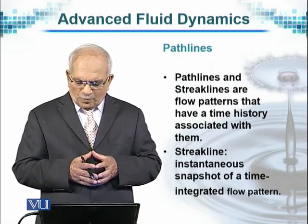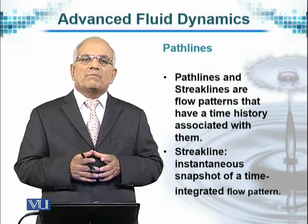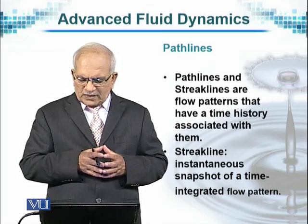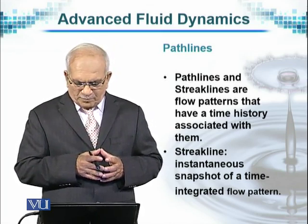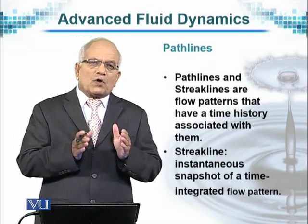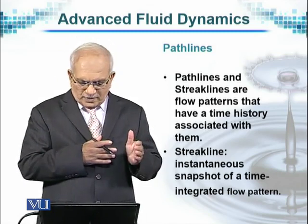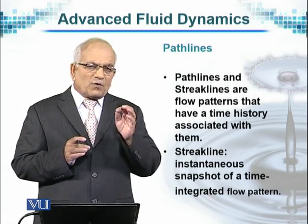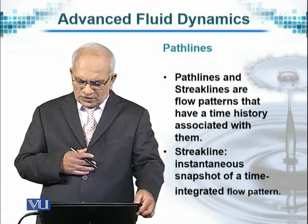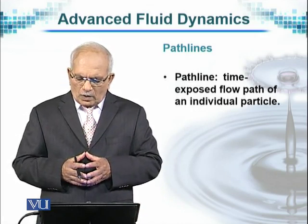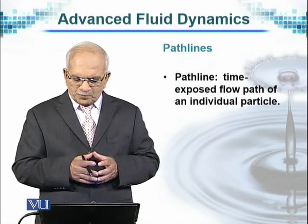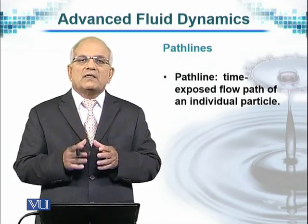Path lines and streak lines are flow patterns that have a time history associated with them — meaning there is a time change involved. A streak line is an instantaneous snapshot of a time-integrated pattern. When the streak line has elapsed over time with changes in the unsteady flow, it gives an instantaneous picture of how the flow has changed its behavior. It will be the same if the flow was steady. A path line is the time-exposed flow path of an individual particle, measured over time.